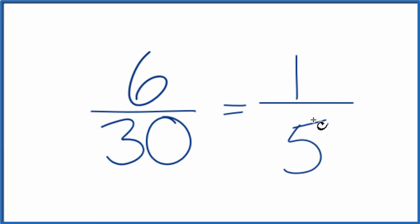We can't simplify this any further. And these are equivalent. If you divide 1 by 5 and 6 by 30, you get the same value.